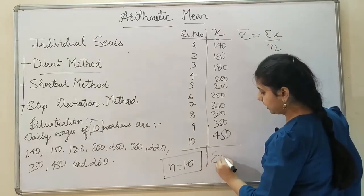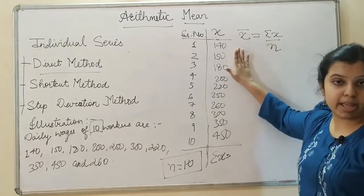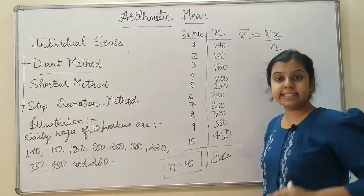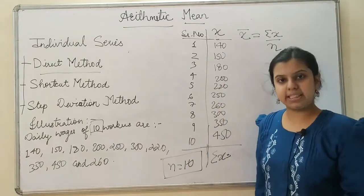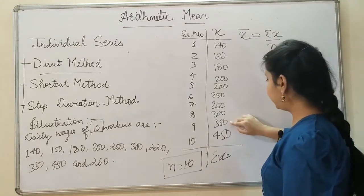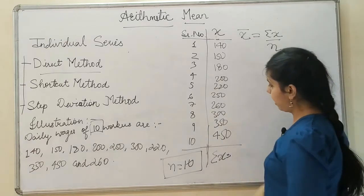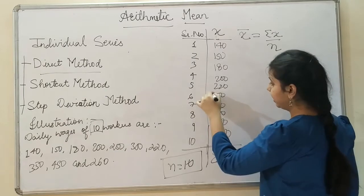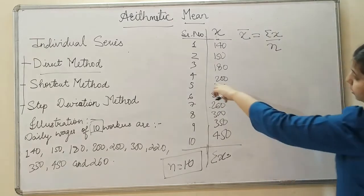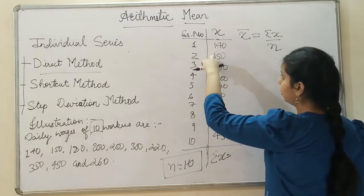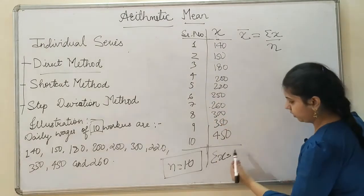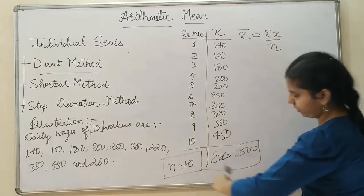Now what I have to calculate is sigma X. My X values are the wages listed, so I will be adding all the values to get sigma X. Adding them up: 250 plus 350 gives 800, then 1100, then 1360, 1500, 1610, 1830, 2030, and finally 2400 — wait — so my sigma X comes to 2500.